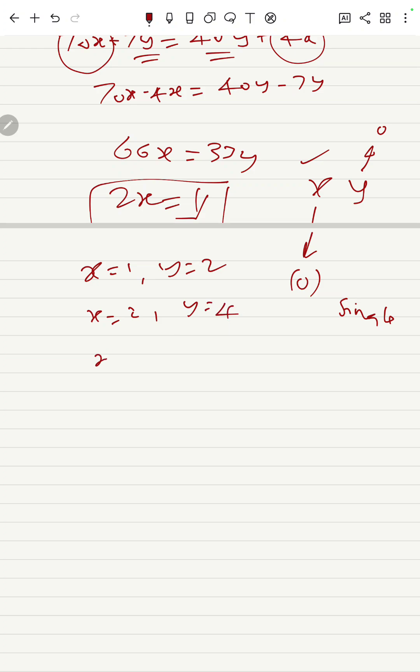So if X is equal to 1, then Y will be 2. If X is equal to 2, Y will be 4. X is equal to 3, Y will be 6. Then if X is equal to 4, Y will be 8. I cannot take X equal to 5 because it will become 10—it's not a digit, not a single digit. So I think these are the combinations.